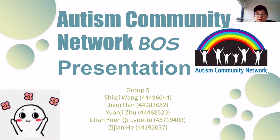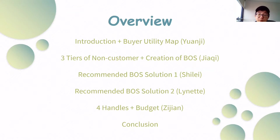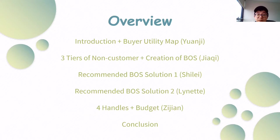In my part, I will give a brief introduction about ACN and explain one of the Blue Ocean Strategies tools, which is the VIA utility map. Second, Jiaqi will show another tool — the three tiers of non-customers and the creation of the BOS. Then, Shirley and Lynette will provide two different recommended solutions. And lastly, Zijian will give the four hurdles and the budget view with the conclusion.